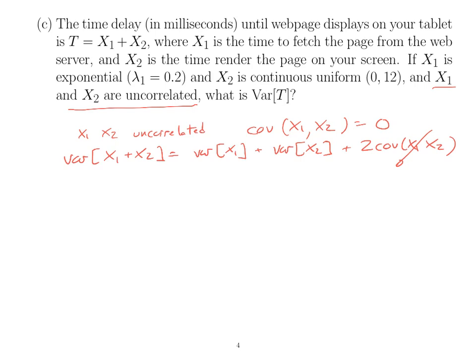The second step is knowing what these two variances are. The variance of X₁ — you could try to derive it, but that would be a mistake; it's kind of a pain using integration by parts. For an exponential, it's 1/λ₁². So it's 1/(1/5) squared, which equals 25.